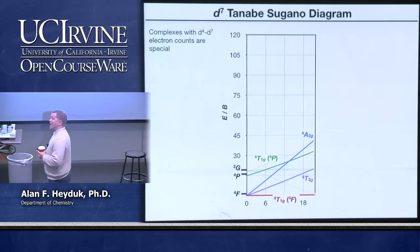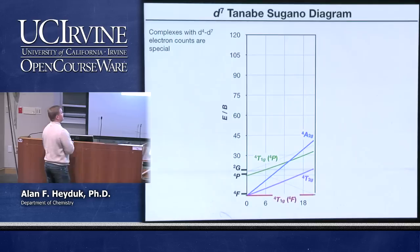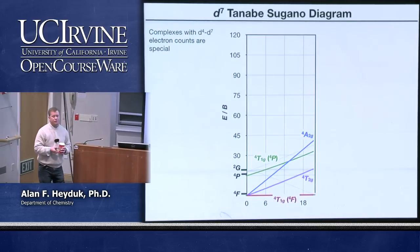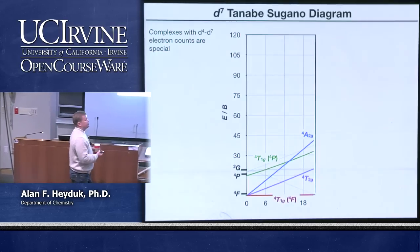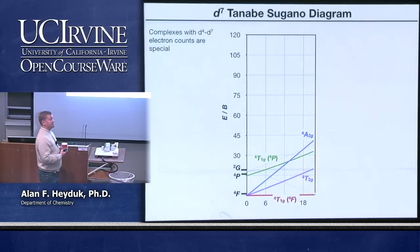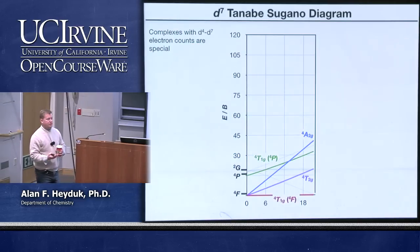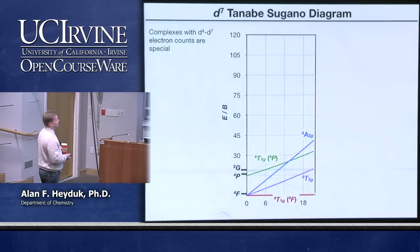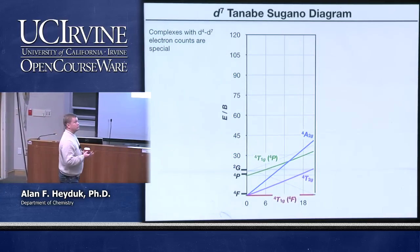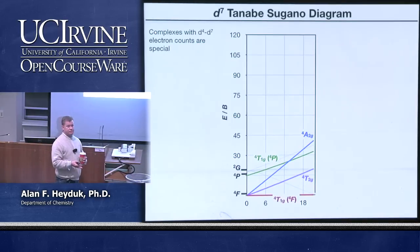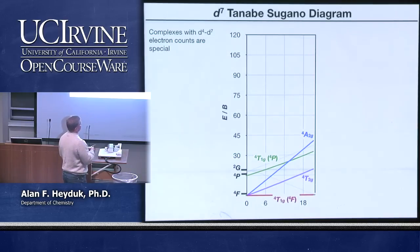The Tanabe-Sugano diagram has to take the high-spin/low-spin possibility into consideration. If we consider D7 — seven electrons in five orbitals — we have two different cases. The first is the high spin case, where you put all the electrons in to maximize the number of unpaired electrons. That happens when delta O is small relative to the electron pairing energy. Here's a Tanabe-Sugano diagram for the D7 ion; the x-axis is delta O over B.